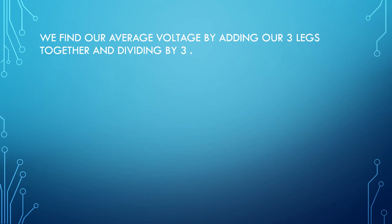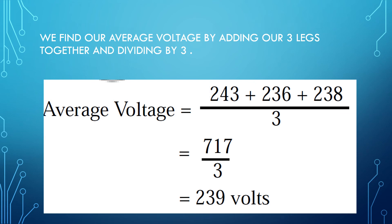We find our average voltage by adding our three legs together and dividing by three. So in this example, our average voltage is 239 volts.